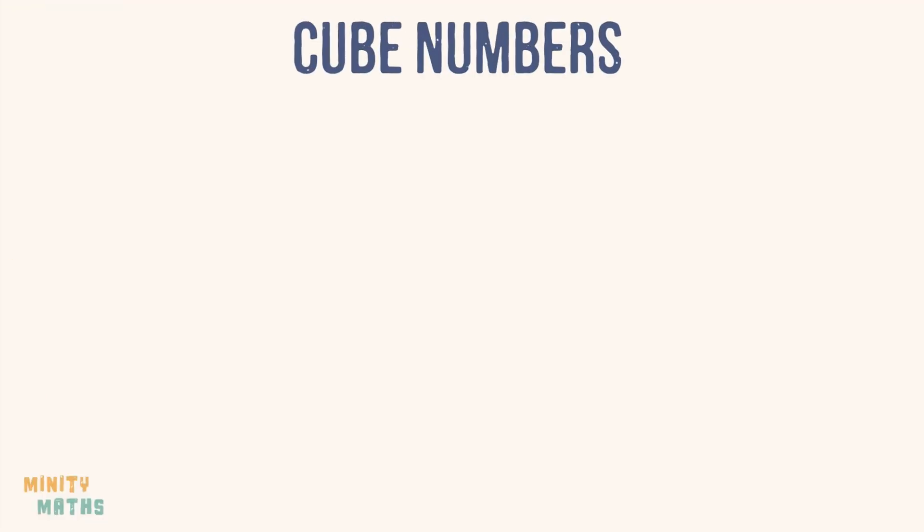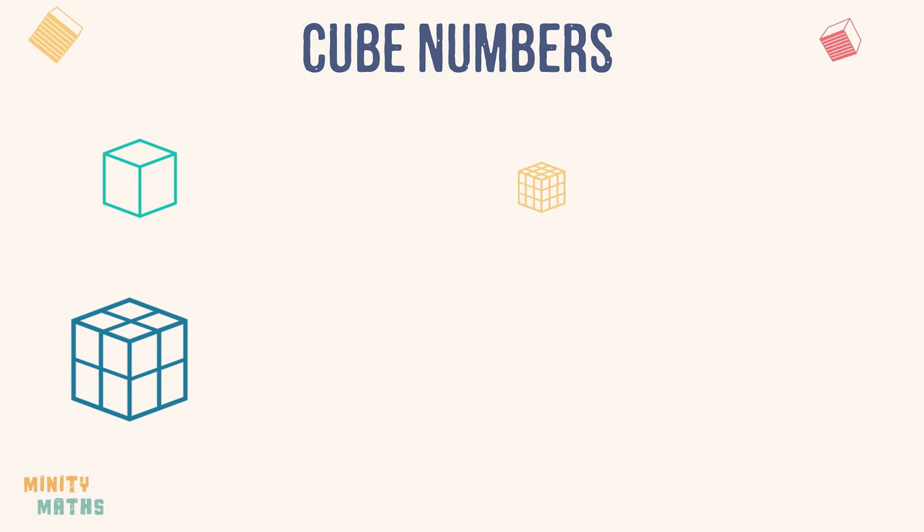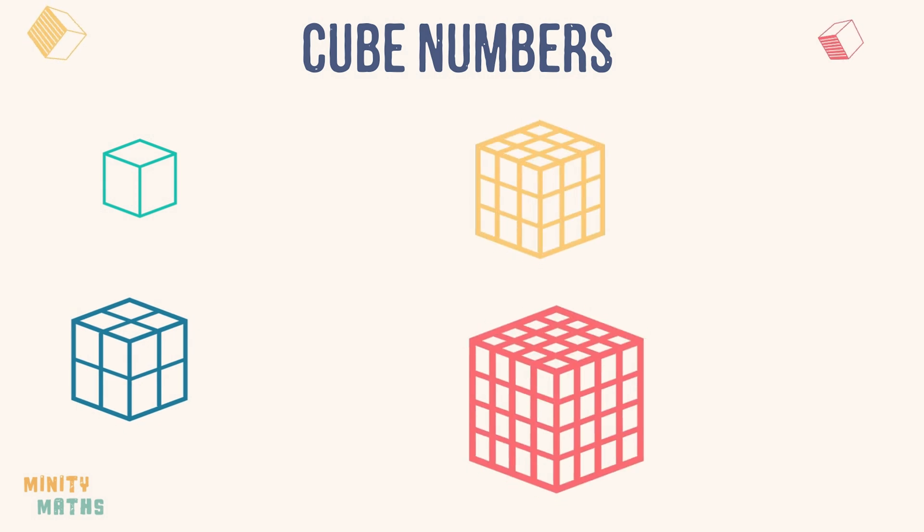Have a look at these cubes and see if you can figure out how cube numbers are formed. Well, a cube number is the product of 3 equal numbers. We can multiply any whole number by itself, then itself again, and we will always end up with a cube number.